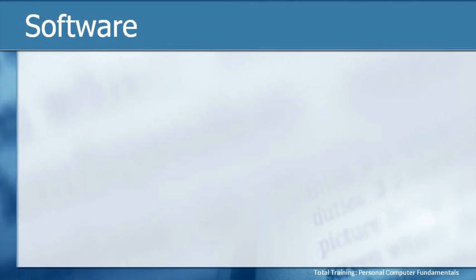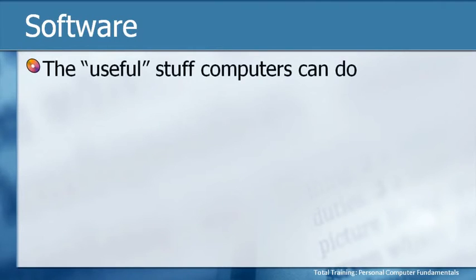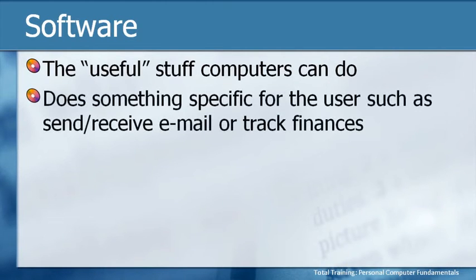Component number three: we've been through hardware, we've been through operating systems, and now to round out the big picture of a functional computer system, we have software. This is actually the useful stuff. Software is the stuff we typically think of as doing the things we like to do, and it's generally going to do something specific for the user, such as send and receive email or track finances.